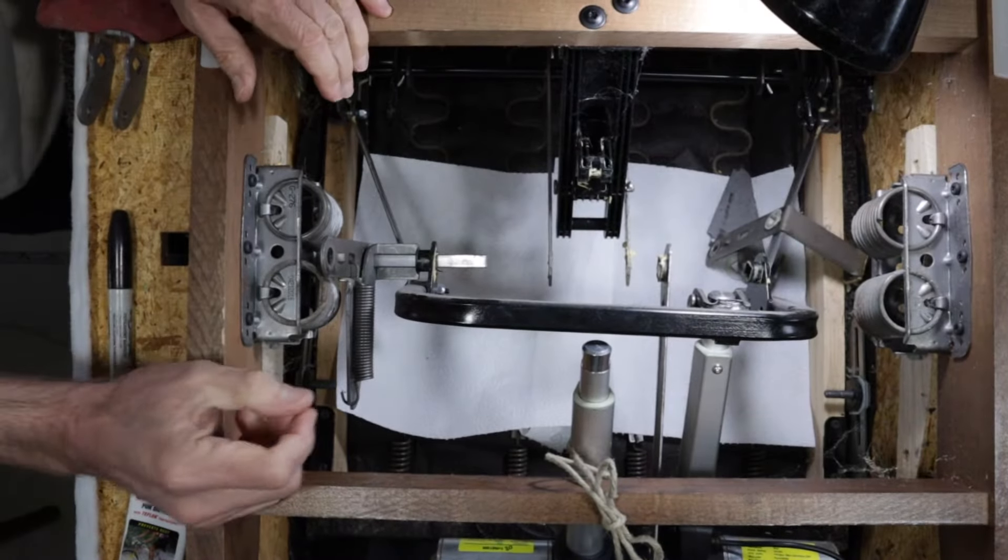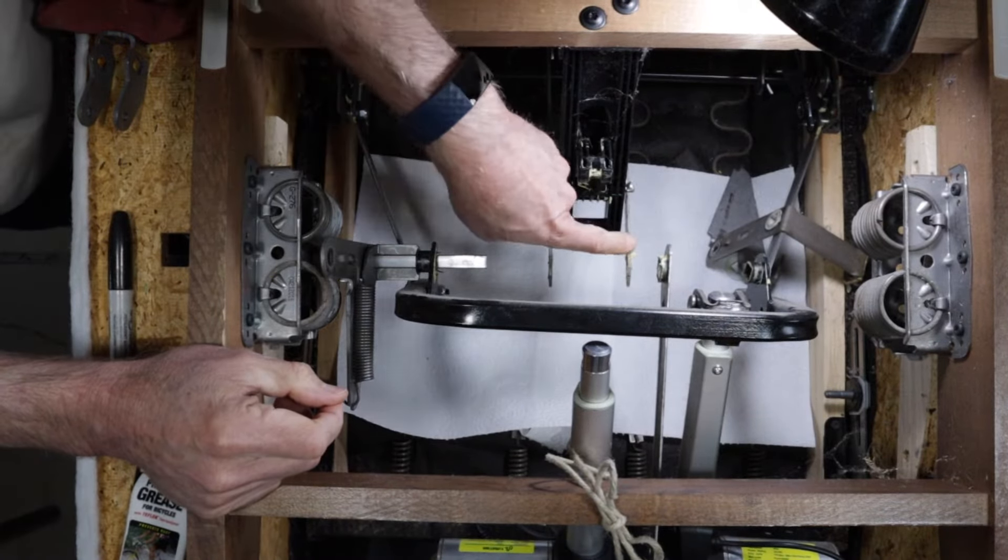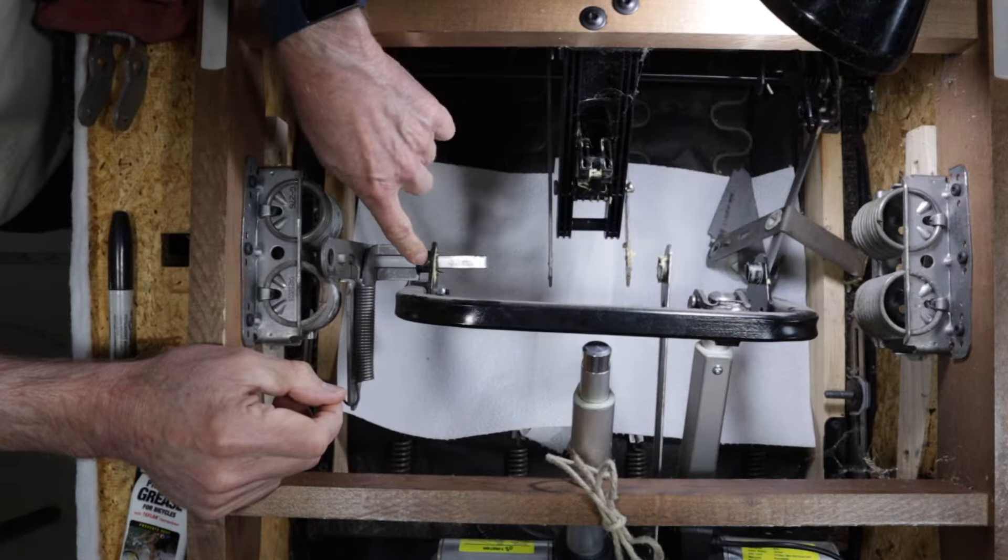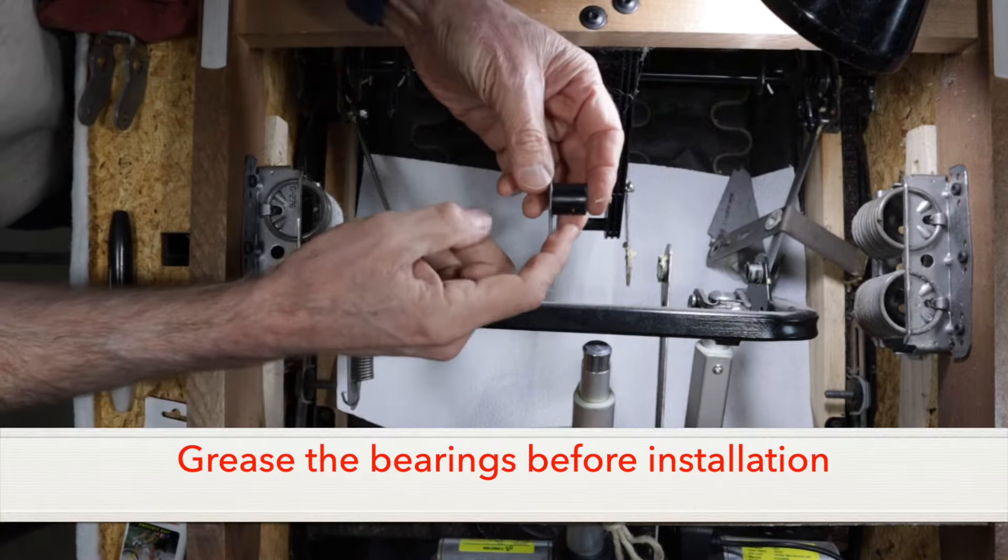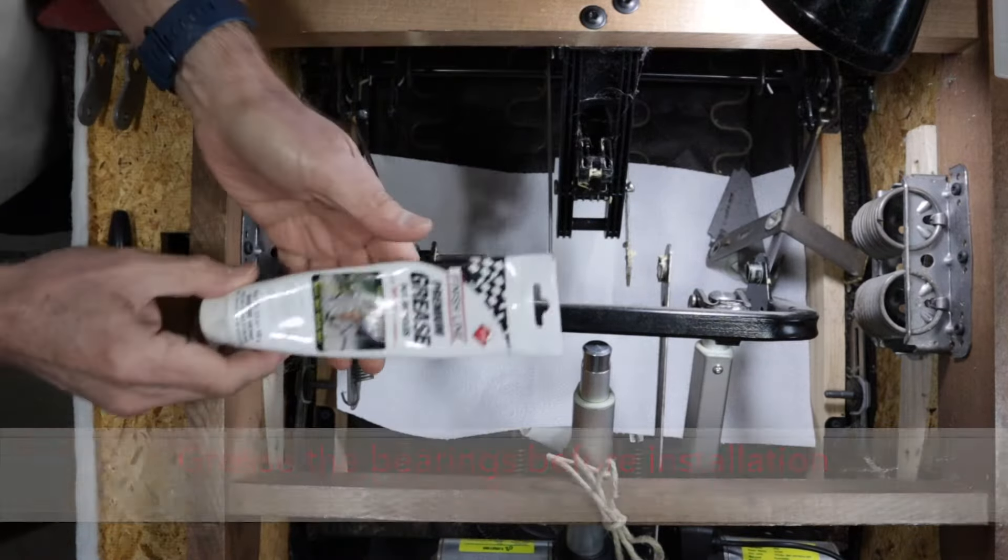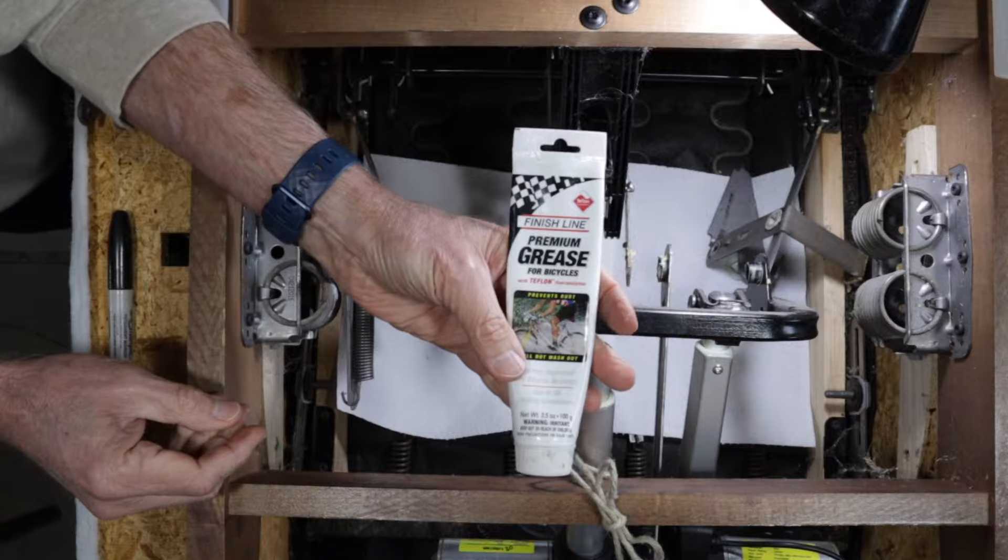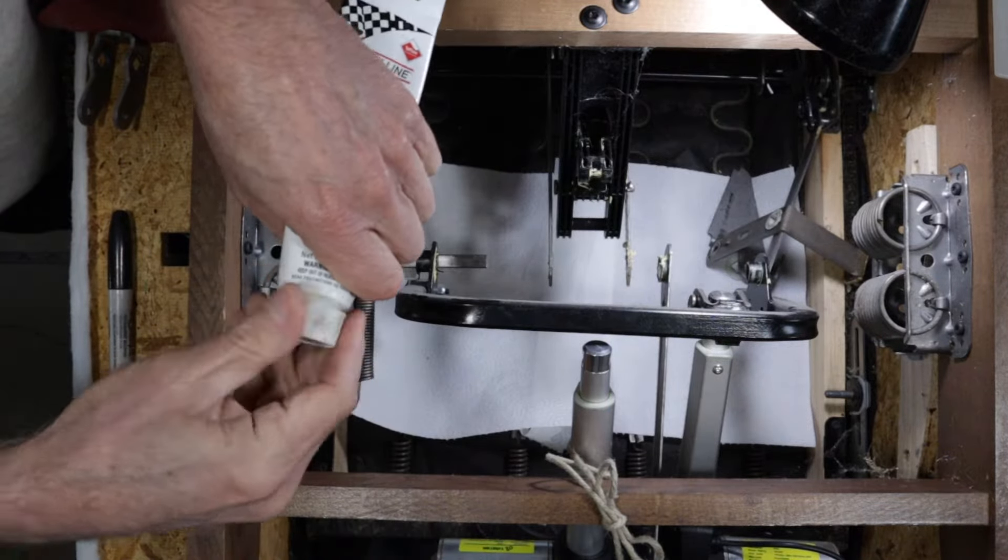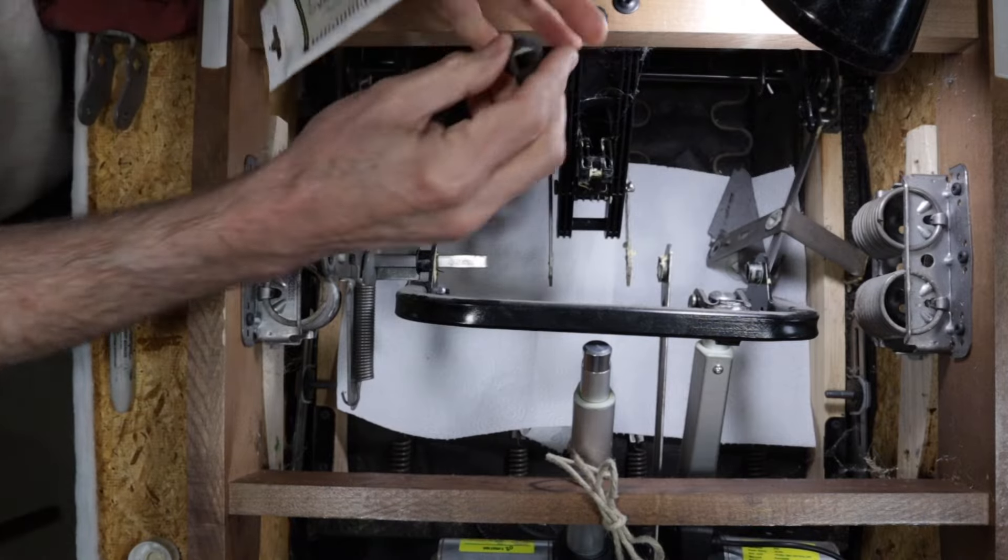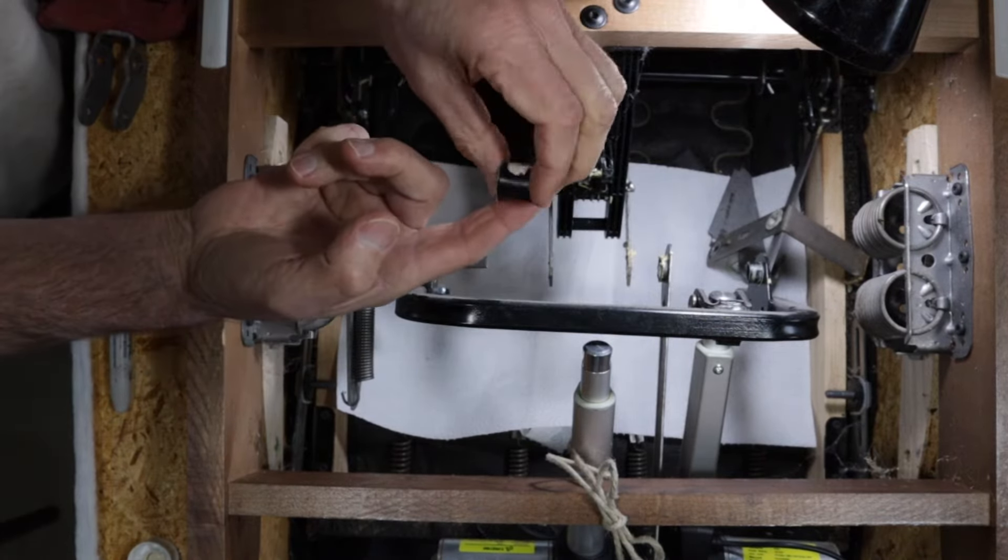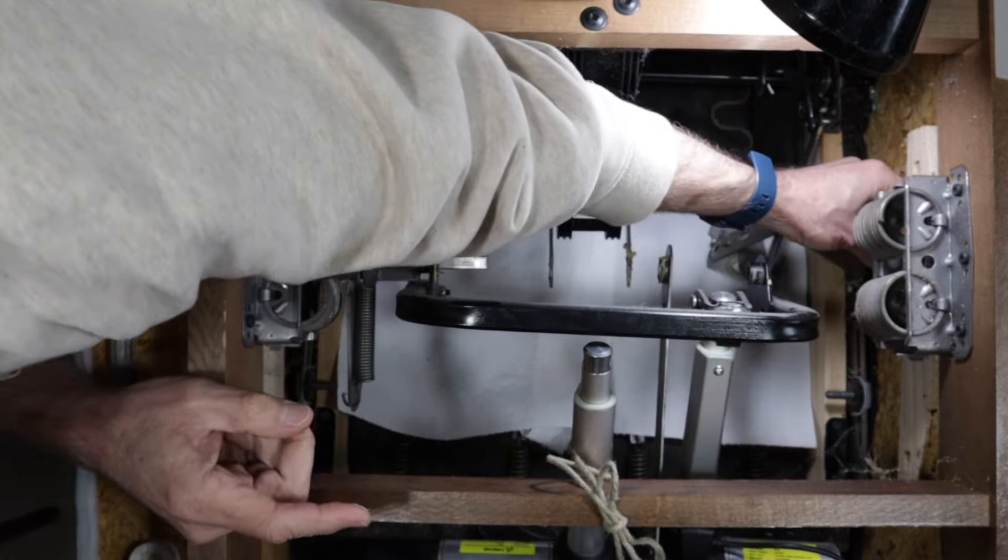All right, before we start putting new parts on, we need to add some grease. You can see the manufacturer used some here. We're going to grease this bearing, this one, and this one that I removed from the side of the arm frame. I use a bicycle grease, but a lithium grease will work as well, and it just allows them to rotate more smoothly and easily. So let's put that back in.